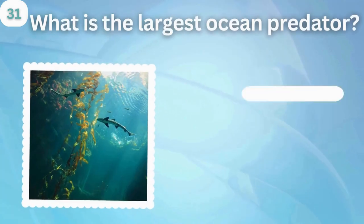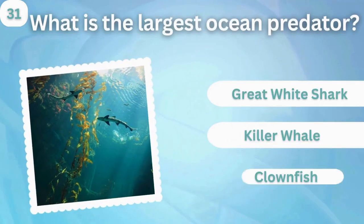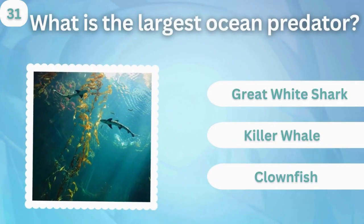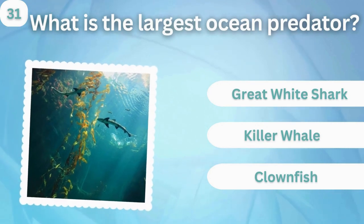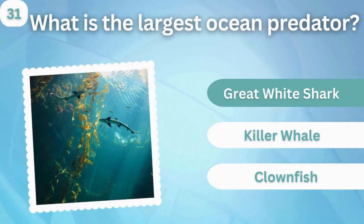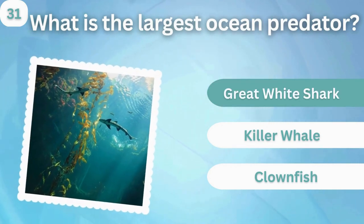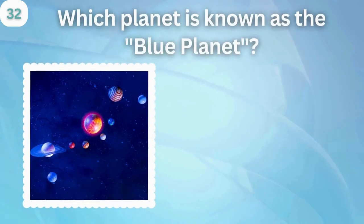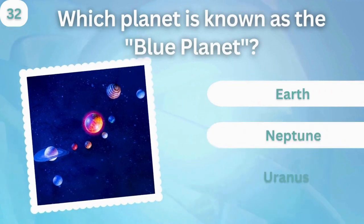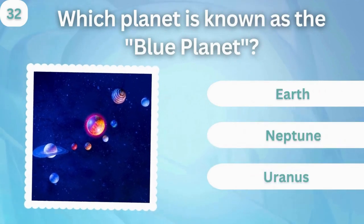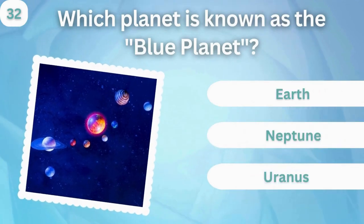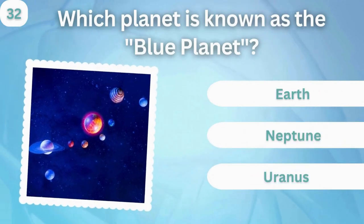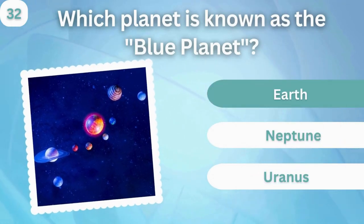What is the largest ocean predator? Great white shark, killer whale, or clownfish? Great white shark. Which planet is known as the blue planet? Earth, Neptune, or Uranus? Earth.